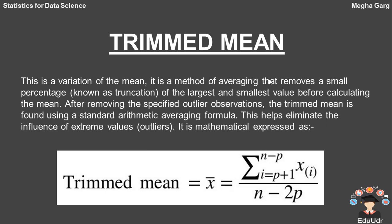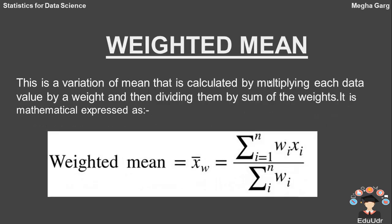And it is mathematically expressed as trimmed mean = x̄ = summation i=p+1 to n-p of x(i) upon n-2p. And this other variation of mean is weighted mean. It is calculated by multiplying each data value by a weight and then dividing by the sum of the weights. It is mathematically expressed as summation of wi*xi upon wi. Wi is the weight of each observation.